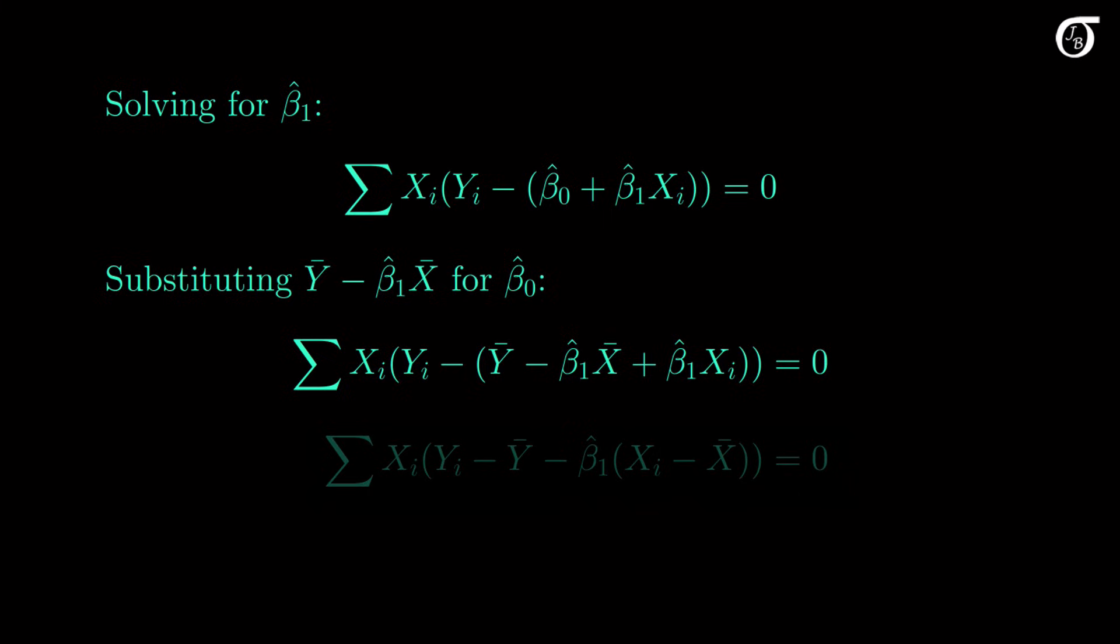Now we're getting somewhere, because we've only got one unknown in this equation. At this point there are many ways of going about isolating beta1 hat. I'm going to take a route that gets us the expression in a way that it's very commonly expressed, but there are other paths we could take.